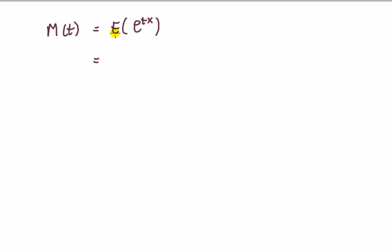Continuous uniform distribution, so we know that we have to integrate, not sum, because it's continuous. Times the PDF, which is 1 over B minus A, dx.